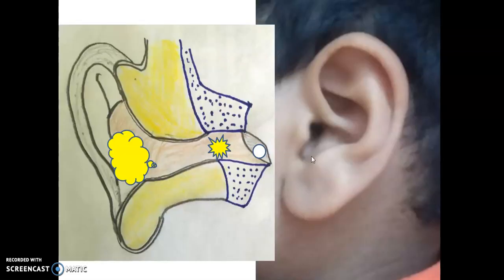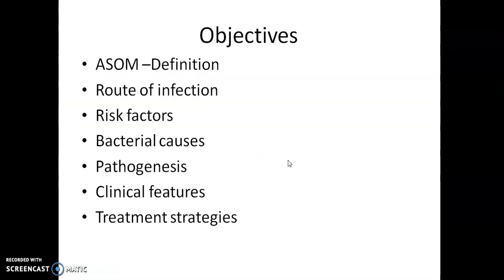So what is acute suppurative otitis media? It is an inflammation in the middle ear that ultimately results in perforation and the pus starts leaking out. This topic will be covered under the following headings: the definition, the route of infection, the risk factors, the bacteria causing it, pathogenesis and clinical features, and treatment strategies involved.